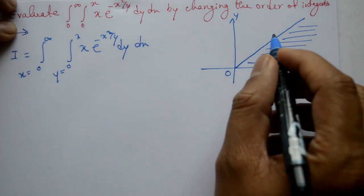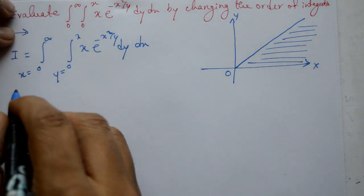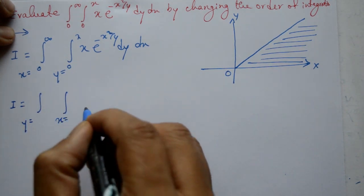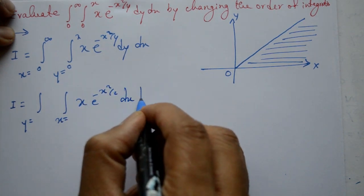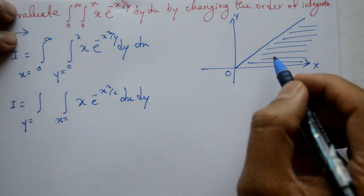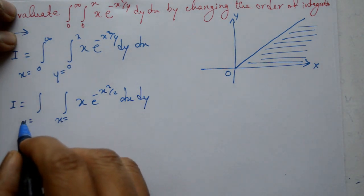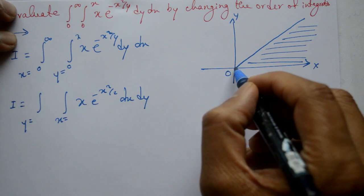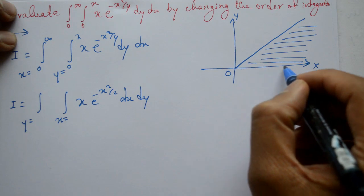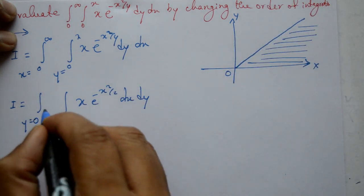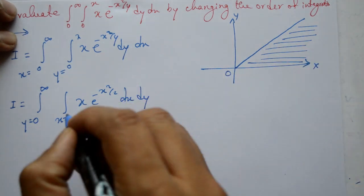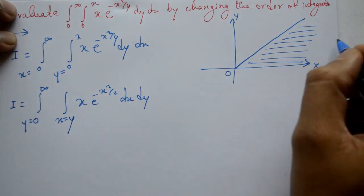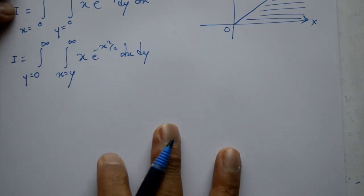As shown in the figure, on changing the order of integration: I = integration, first y lenge, baad mein x lenge — x into e raised to minus x square by y, dx dy. Y is equal to 0, up to infinity. Baad mein x aayega: x is equal to y, up to infinity. Is tarah order change ho jayega.